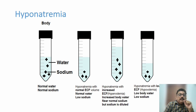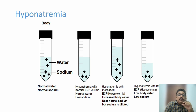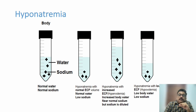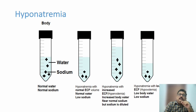Looking at the diagram: the first test tube represents normal body water and sodium content. The second test tube shows body water is normal but sodium levels are low - that is hyponatremia with normal volemia. The third test tube shows sodium is normal but water content is very high - hypervolemic relative hyponatremia. SIADH comes in the first category of normal volemic hyponatremia, but there is a slight increase in body water.